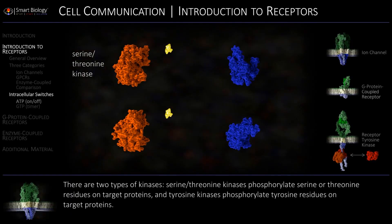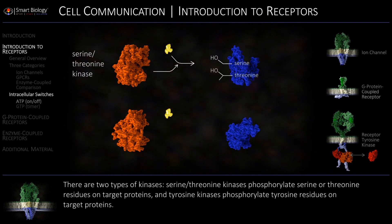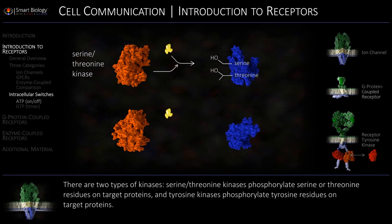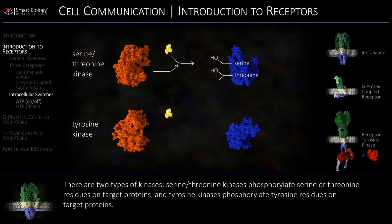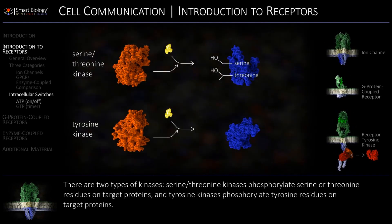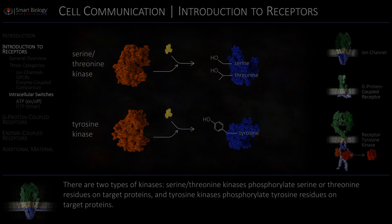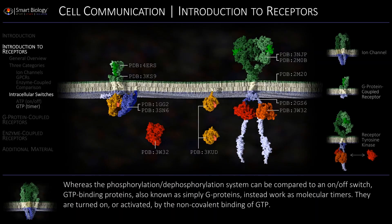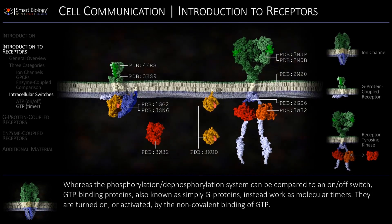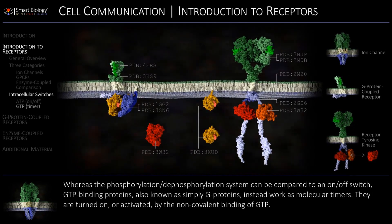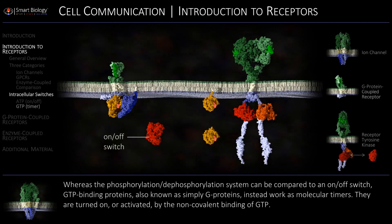Serine-threonine kinases phosphorylate serine or threonine residues on target proteins, and tyrosine kinases phosphorylate tyrosine residues on target proteins. Whereas the phosphorylation-dephosphorylation system can be compared to an on-off switch,